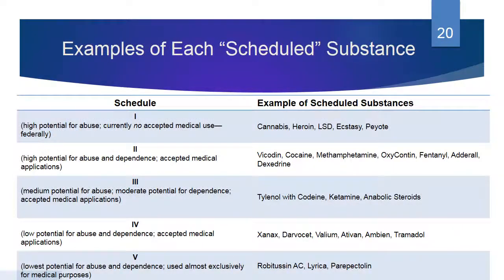Here are some examples to illustrate the absurdity. Schedule 1: high potential for abuse, currently no accepted medical use federally. That includes cannabis, heroin, LSD, ecstasy, and peyote. Yes, we know heroin is very bad. But when you look at cannabis, there are thousands of studies done in the last 20 years that demonstrate a clear correlation between use and pain relief.